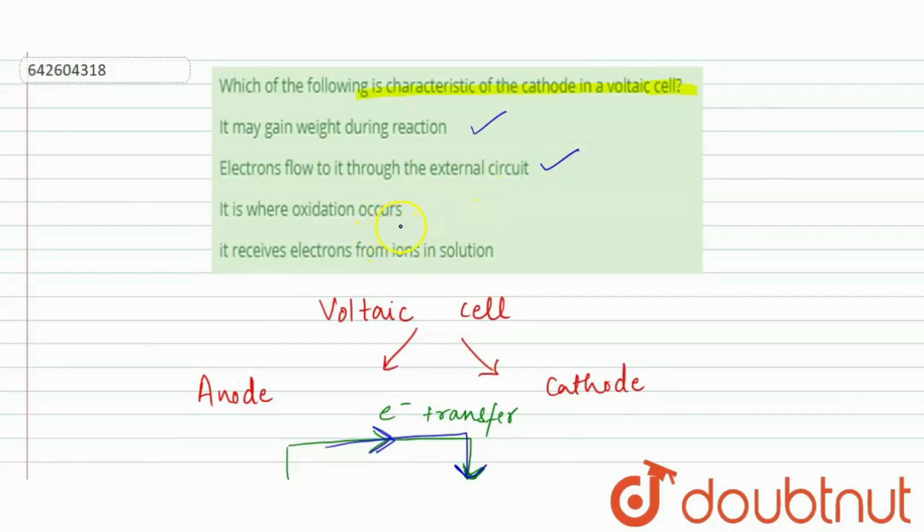Now third is, it is where oxidation occurs. No, it is not correct. Because at cathode, reduction takes place.